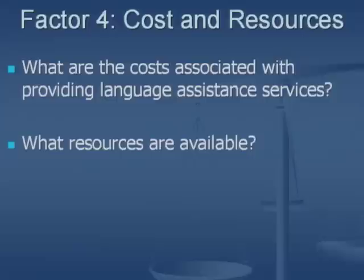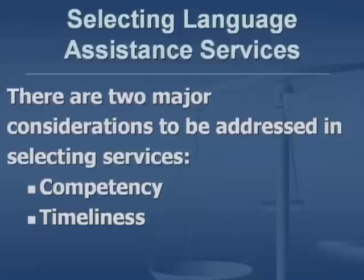The fourth factor is costs and resources. What are the costs associated with providing language assistance services, and what resources are available? Resources don't just mean financial resources — they include interpreter referral services, bilingual staff, community organizations with language skills. The costs and available resources are the fourth factor in determining the level and best approach to providing services to persons who are limited English proficient.